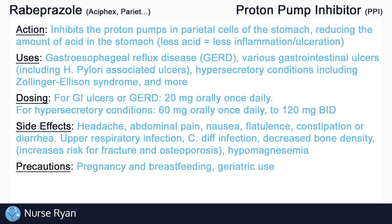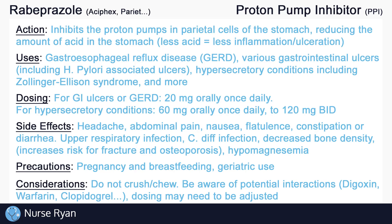We also want to exercise caution during pregnancy, breastfeeding, geriatric use, and more, as dosing may need to be adjusted. It's very important not to crush or chew proton pump inhibitors, as they are often administered as enteric-coated capsules which require the medication to pass through the stomach and into the intestine where they can then be absorbed. If chewed or crushed, the medication will be rendered ineffective by the acid in the stomach.